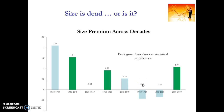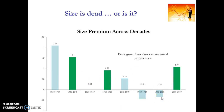A negative size premium implies that large firms actually earned a higher return than small firms. However, looking at the performance of small firms in the 2000s, we can actually see that there appears to have been a return of the effectiveness of the small firm investment strategy, because across this particular decade, small firms outperformed large firms by an average of 1% per month. So while people have argued that the size effect has disappeared, this most recent decade may give some evidence to suggest there is still basis for considering investing in small firms going forward.